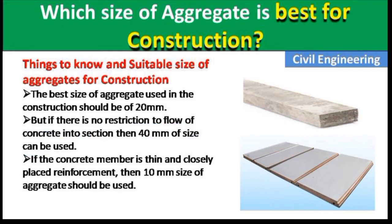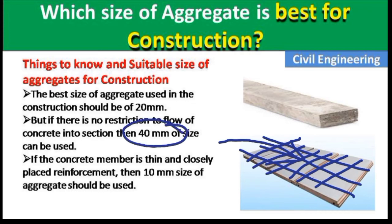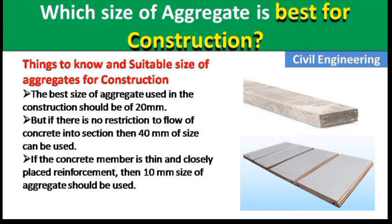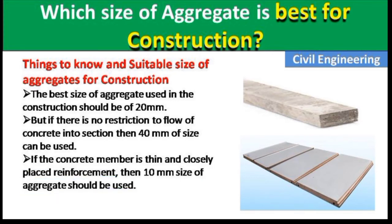If there is no restriction — meaning there is no dense use of steel rods and no restriction on the flow of concrete in the member — then we can use 40 mm size aggregate. If the concrete member is thin and has closely placed reinforcement, then 10 mm size of aggregate can be used.